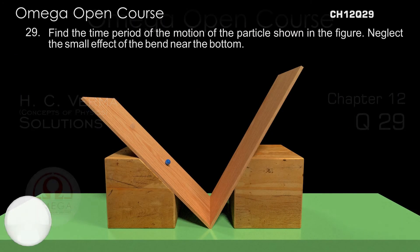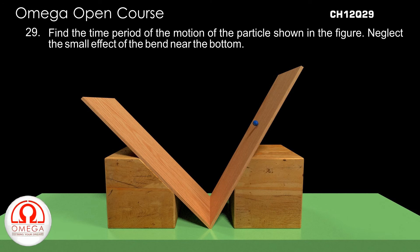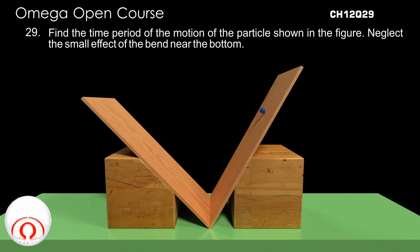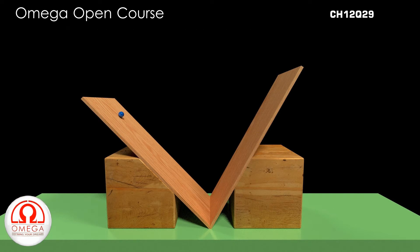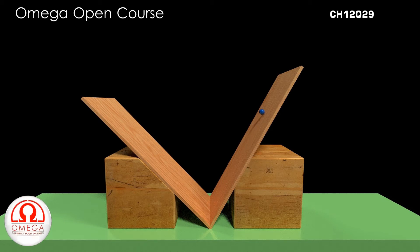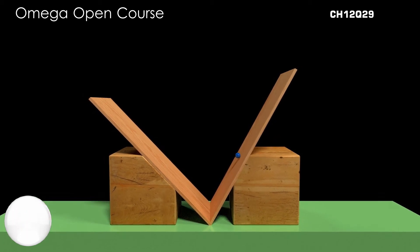Question 29: Find the time period of the motion of the particle shown in the figure. Neglect the small effect of the bend near the bottom. The force causing the motion is gravitational force, which is a constant force. Therefore, the motion of the particle is not simple harmonic but uniformly accelerated motion.